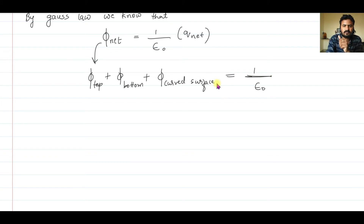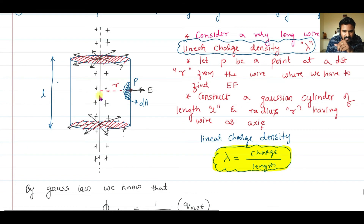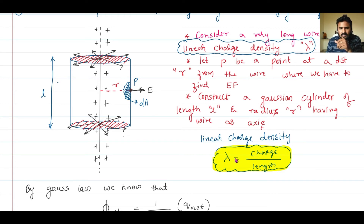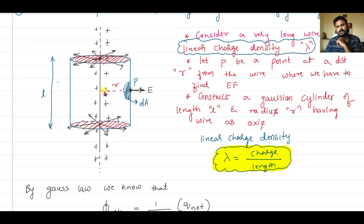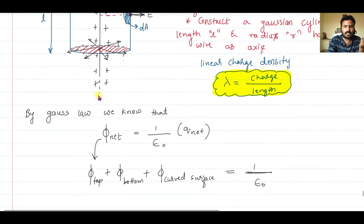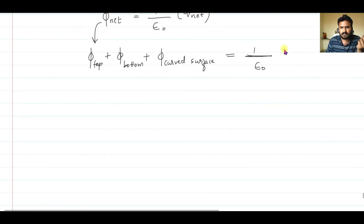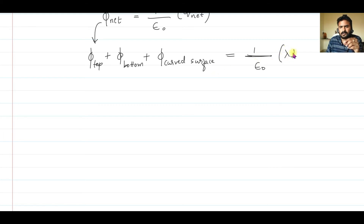How much is the net charge within the closed surface? The length of wire inside the cylinder is L, and the charge per unit length is lambda. So if per unit length the charge is lambda, then for a wire of length L, the total charge is lambda × L — just like if one mango costs 10 rupees, n mangoes cost n × 10 rupees. So the total charge within the cylinder of length L is lambda × L.